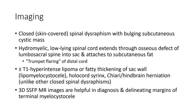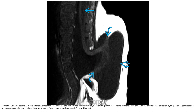3D SSFP MR imaging can be helpful in diagnosis and delineating the margins of the abnormal cord-cystocele. This postnatal T1 image obtained 11 weeks after delivery confirmed the presence of a skin-covered terminal myelocystocele, with splaying of the neural elements around a fluid collection that does not communicate with the surrounding subarachnoid space. There is also syringohydromyelia.